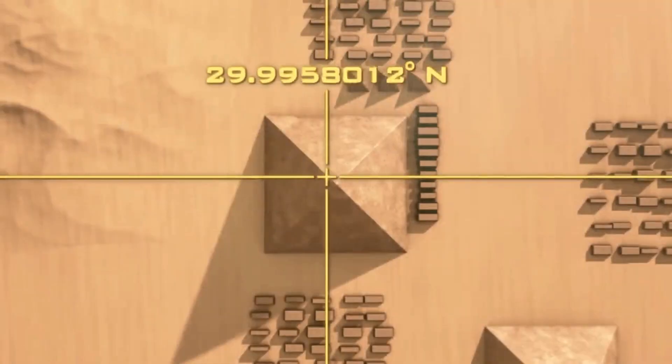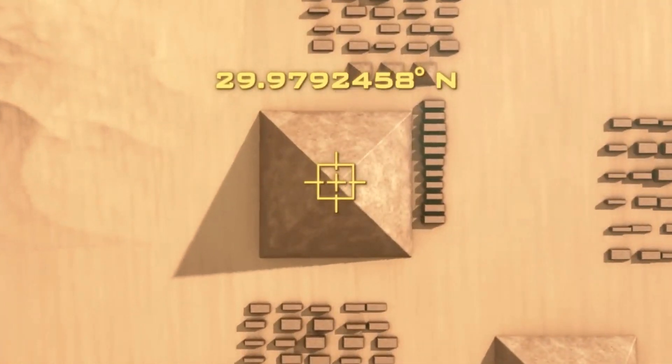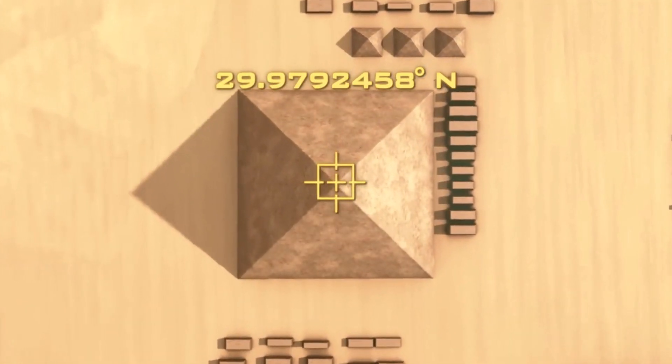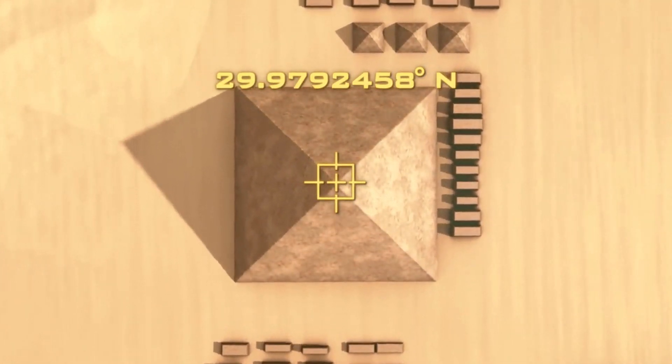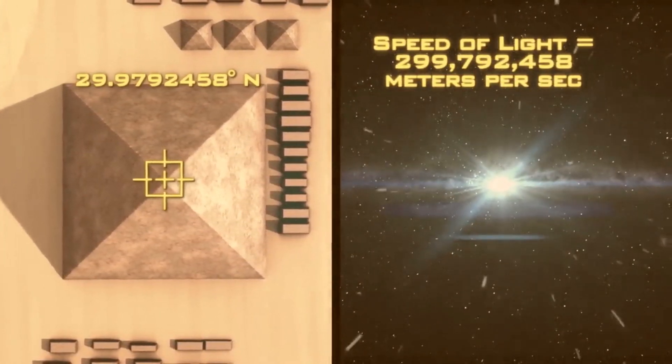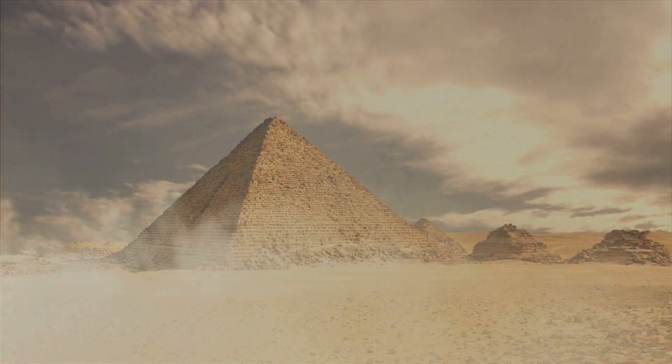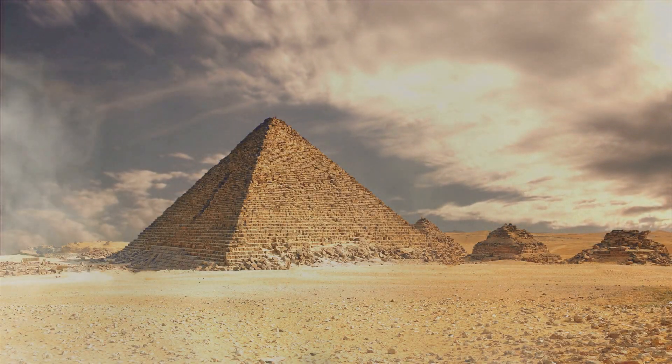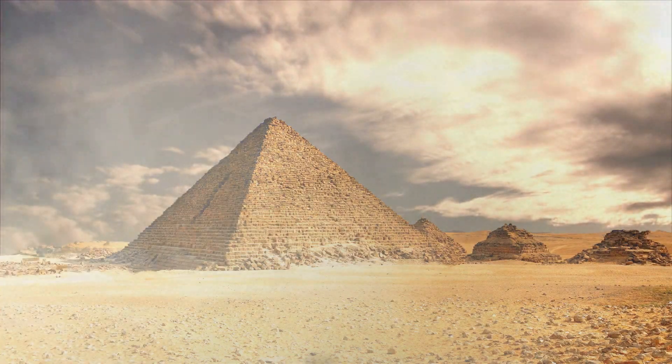If you take the location of the Great Pyramid as a coordinate, this number sequence of coordinates matches exactly the speed of light travelling through space measured in metres per second. Well, this is surprising stuff when you consider the vast amount of information about the Earth that's encoded directly into the Great Pyramid. You can't just dismiss all of this as pure coincidence or means of an accident.